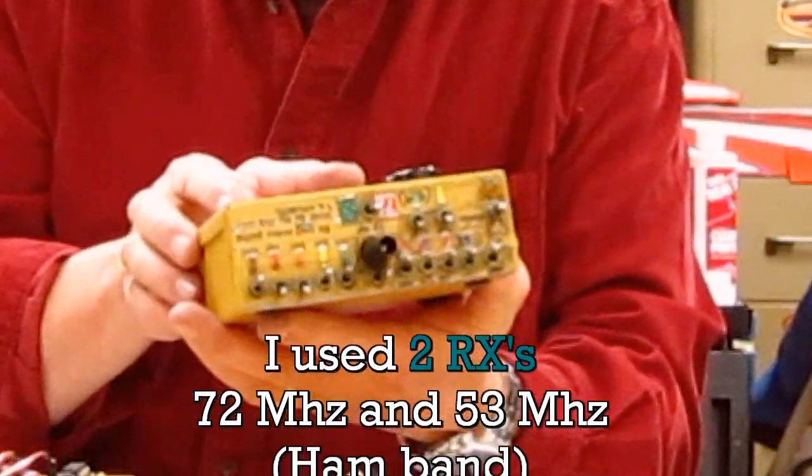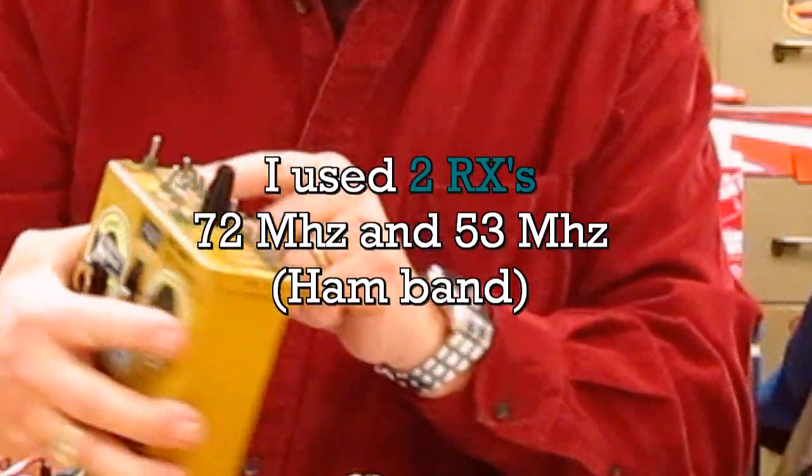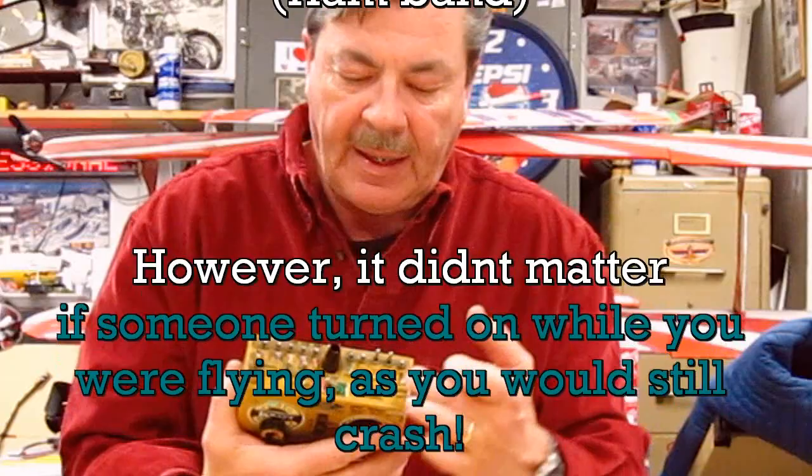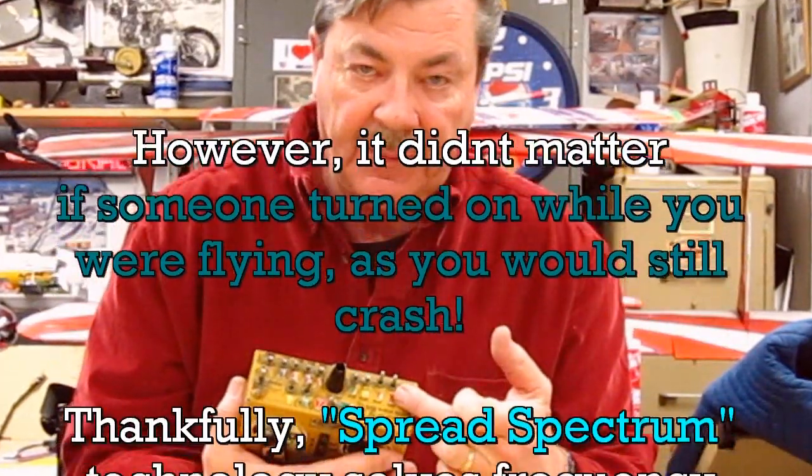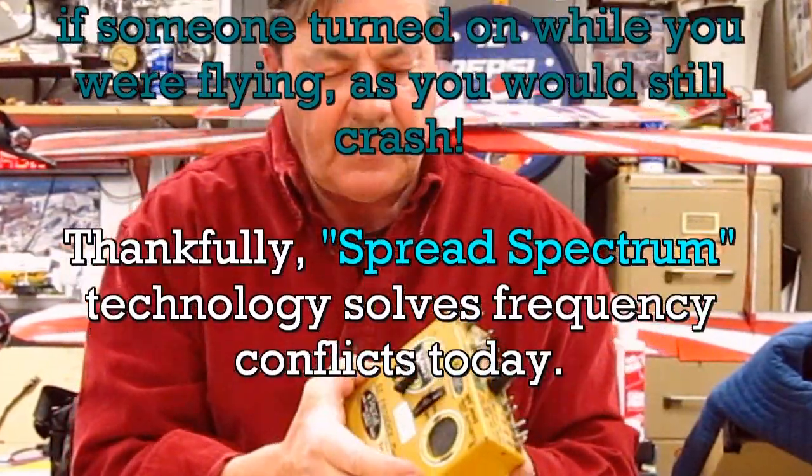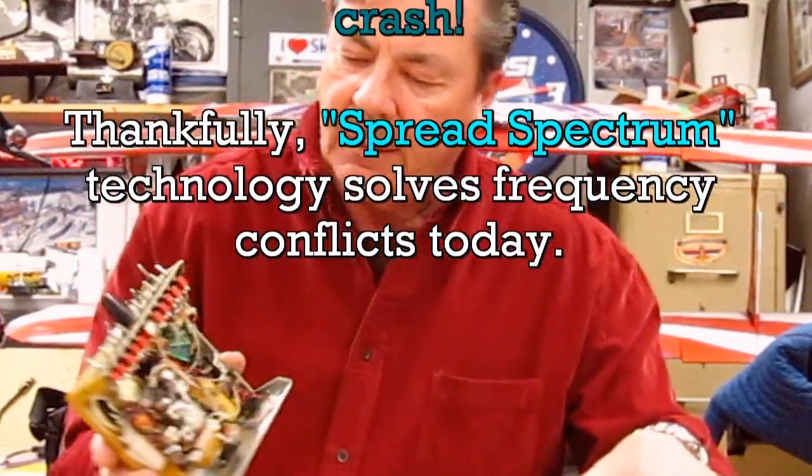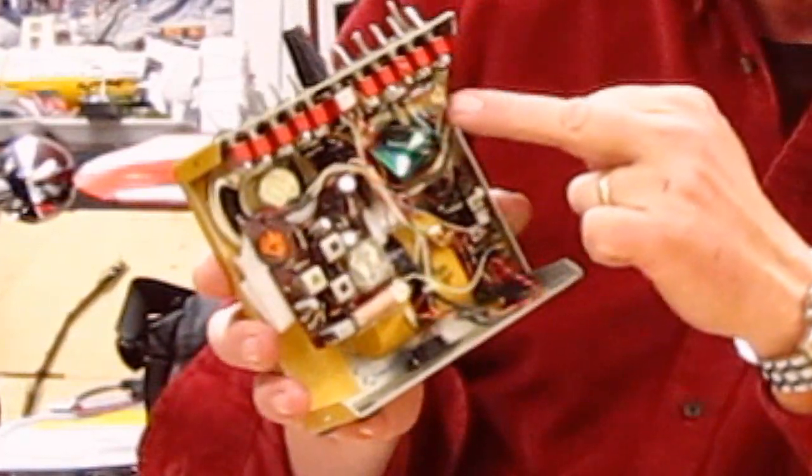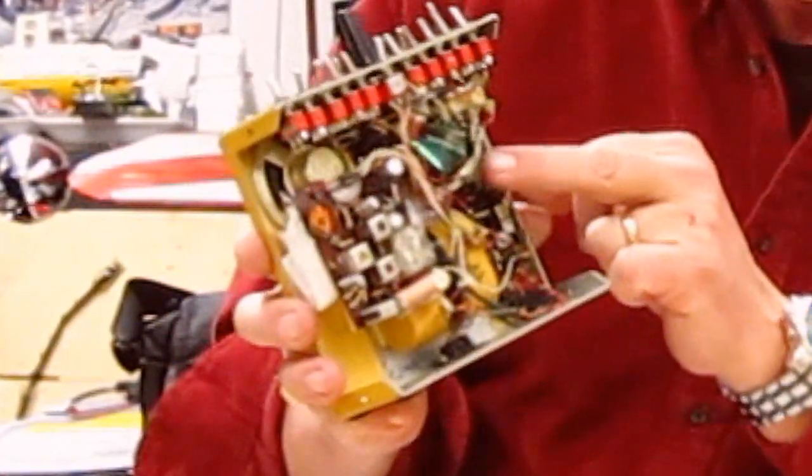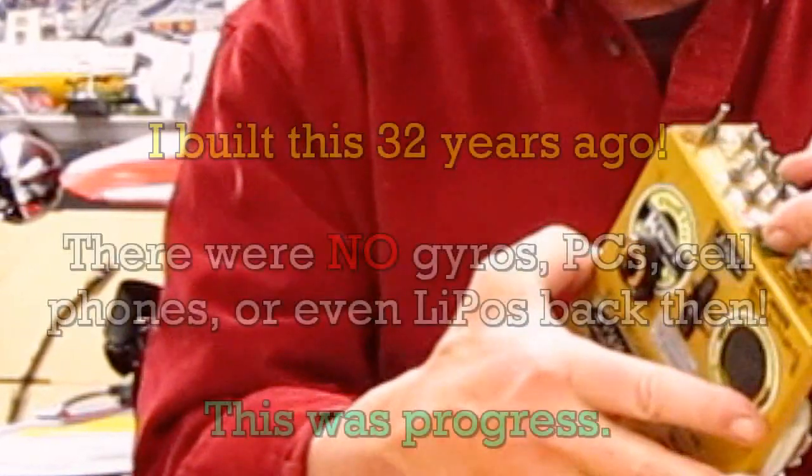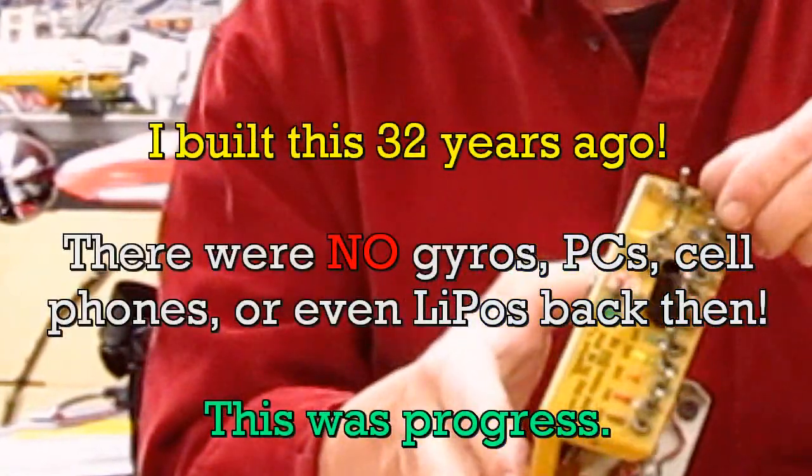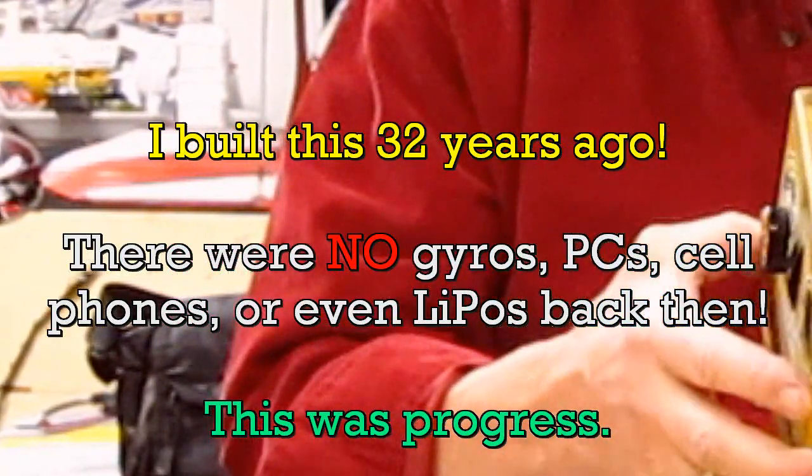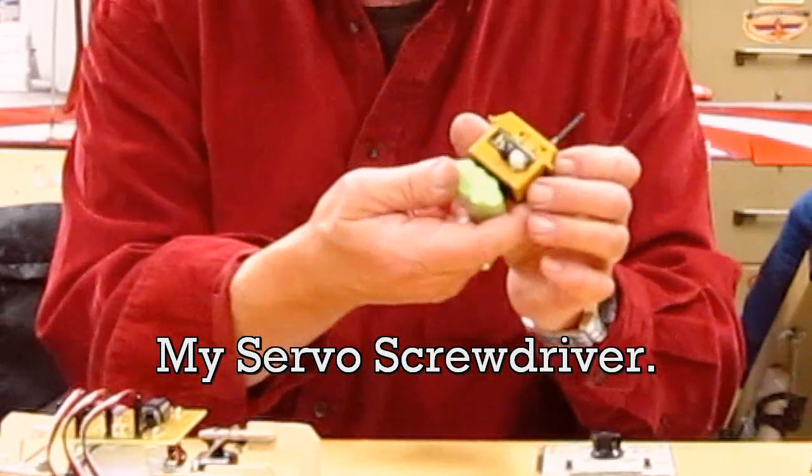Back then we only had the colors on 72 megahertz and five on 53. I built this using an AM radio to hear the frequency with all the crystals set up so you could flip between 72 megahertz and check each person's frequency, because people got shot down all the time when you only had eight frequencies. You've all seen my electric screwdriver servo.